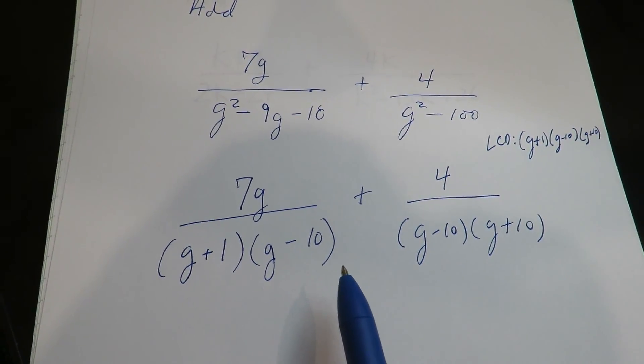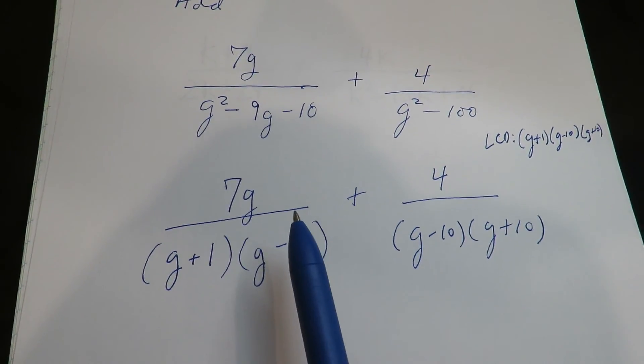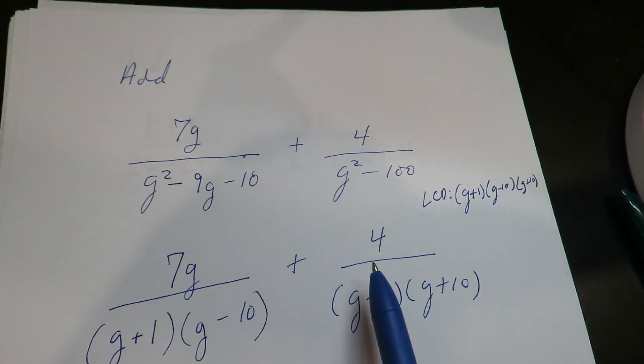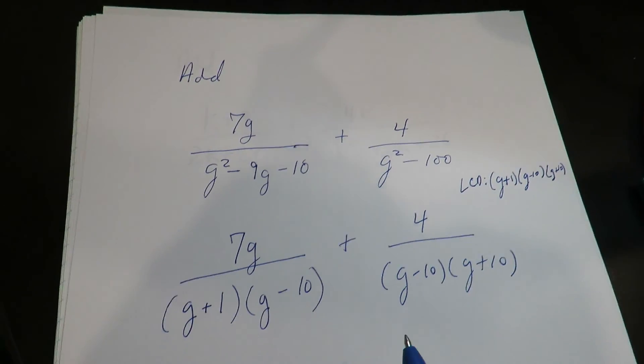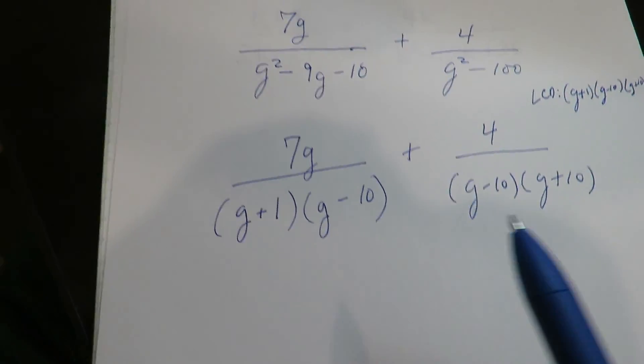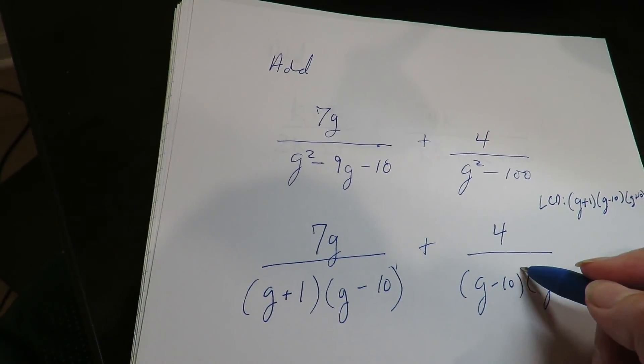You really just need a representative of each type. So if I just have 1 G plus, G minus 10 here and 1 G minus 10 here, at most you need 1. The rule, the exact rule is it's always the highest exponent.